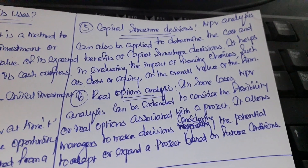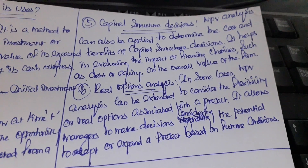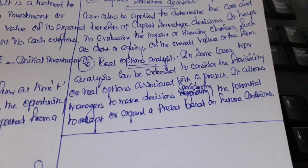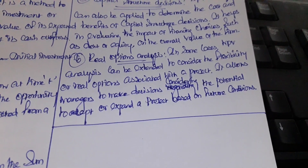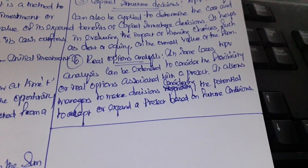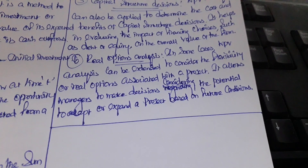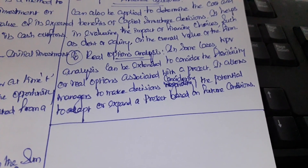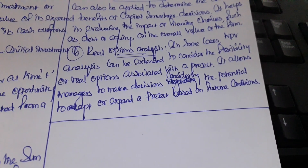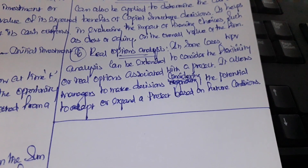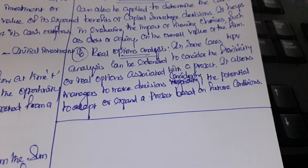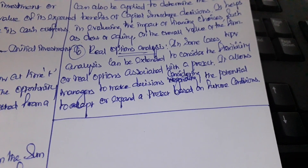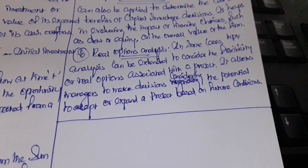The last use is real options analysis. In some cases, NPV analysis can be extended to consider the flexibility or real options associated with a project. It allows managers to make decisions considering the potential to adapt or expand a project based on future conditions. That covers all the uses of NPV.